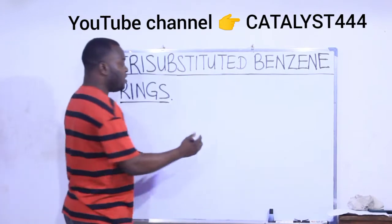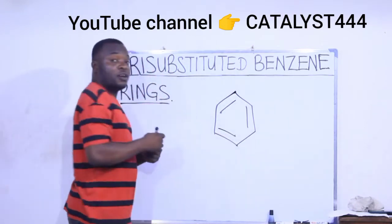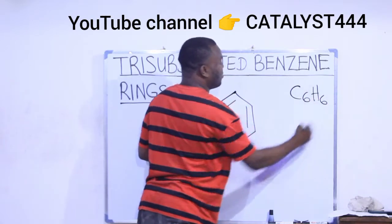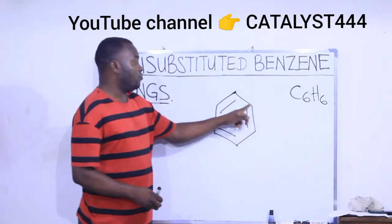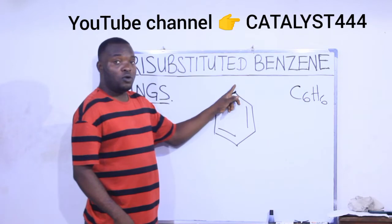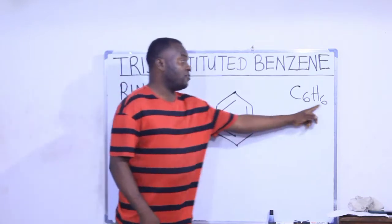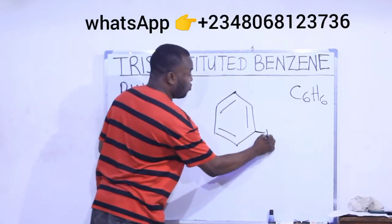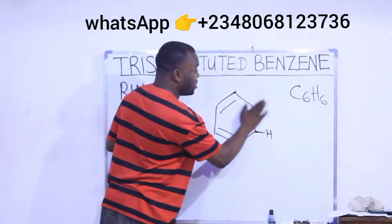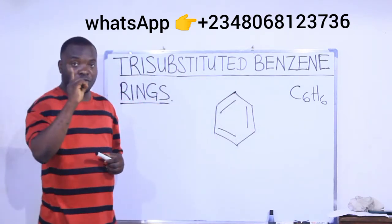Let's take a benzene ring as an example. Remember from the previous video, benzene has the formula C6H6. The six carbon atoms are here, and each of the six carbon atoms on the ring carries one hydrogen atom. When we draw the structure in skeletal form, we don't display the hydrogens, but bear in mind that each carbon carries one H.